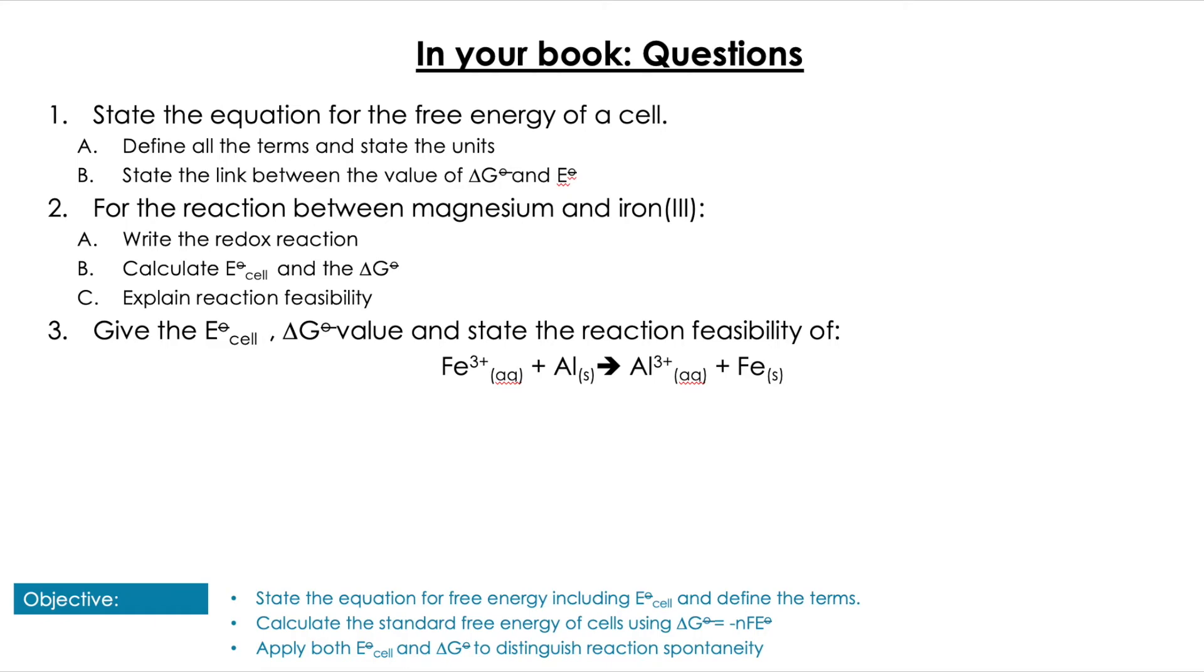Okay, so we can go through the answers here. Hopefully for the first part you should have just written out your equation: ΔG° = -nFE°, where you've got number of moles, Faraday's constant, and of course the E°cell value. You know that the link between these two is they are inverse: when ΔG° is negative, E°cell is positive, etc. We're going to write out the reaction for the second one: Mg + Fe³⁺, that's our redox reaction, and we want to make sure it's fully balanced. You could have used the full half-equation method to do this as well.